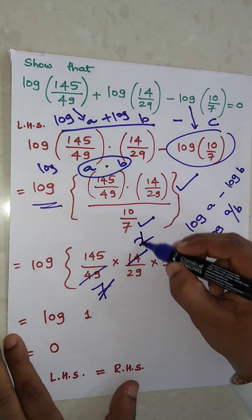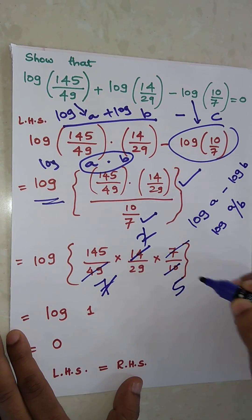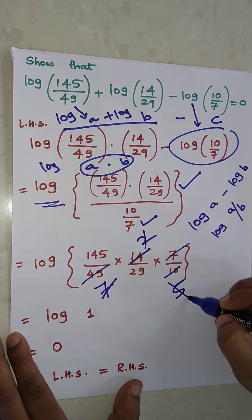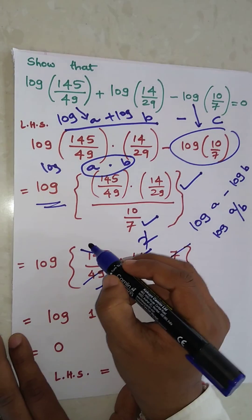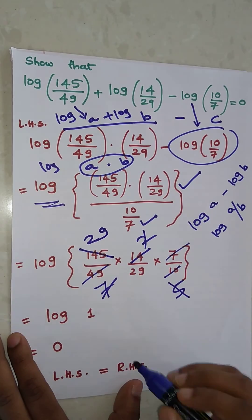Then 2 and this 5 is 10. Then this 5 and this is nothing but 29. And then this 29, this 29 will get cancelled out.